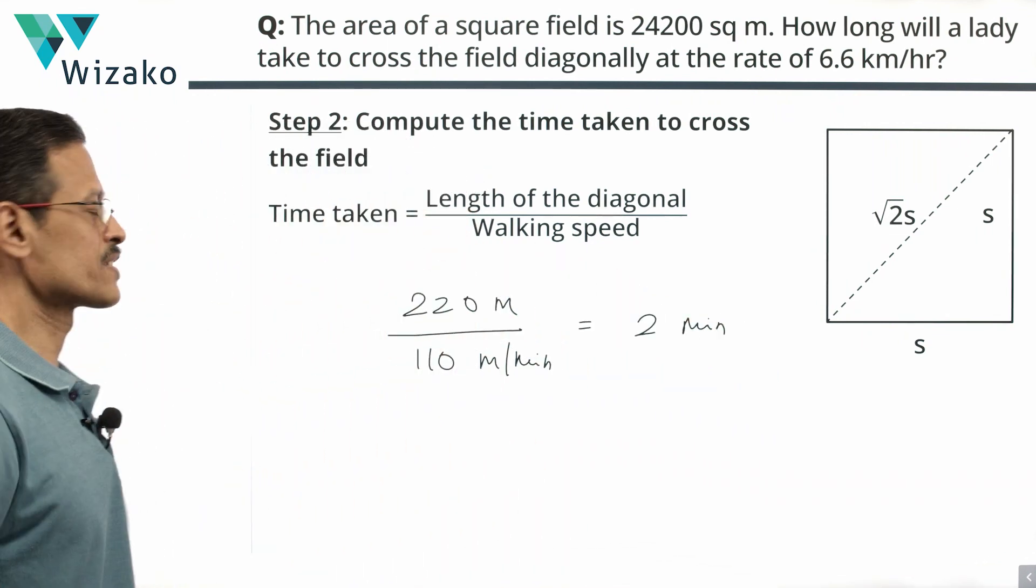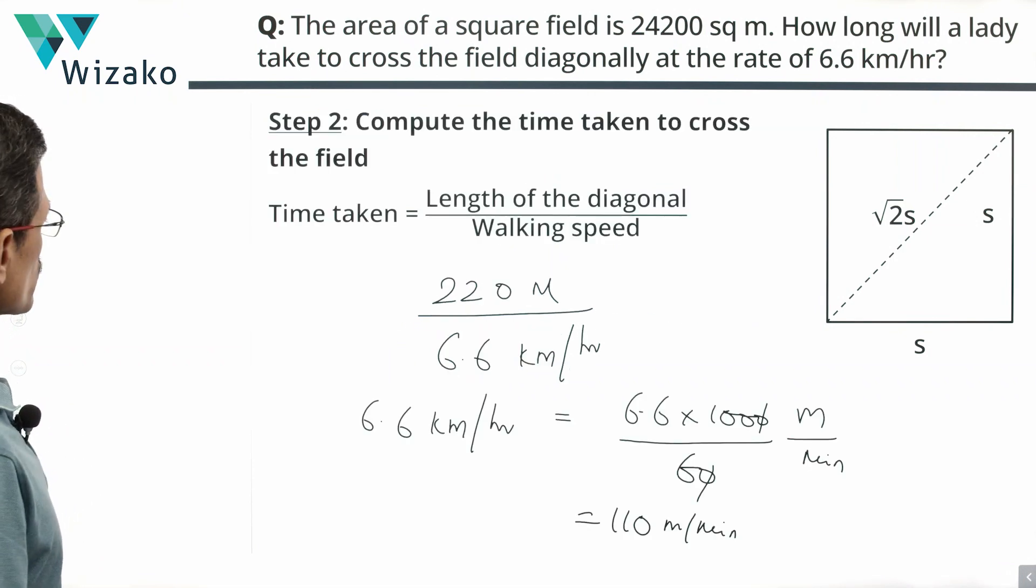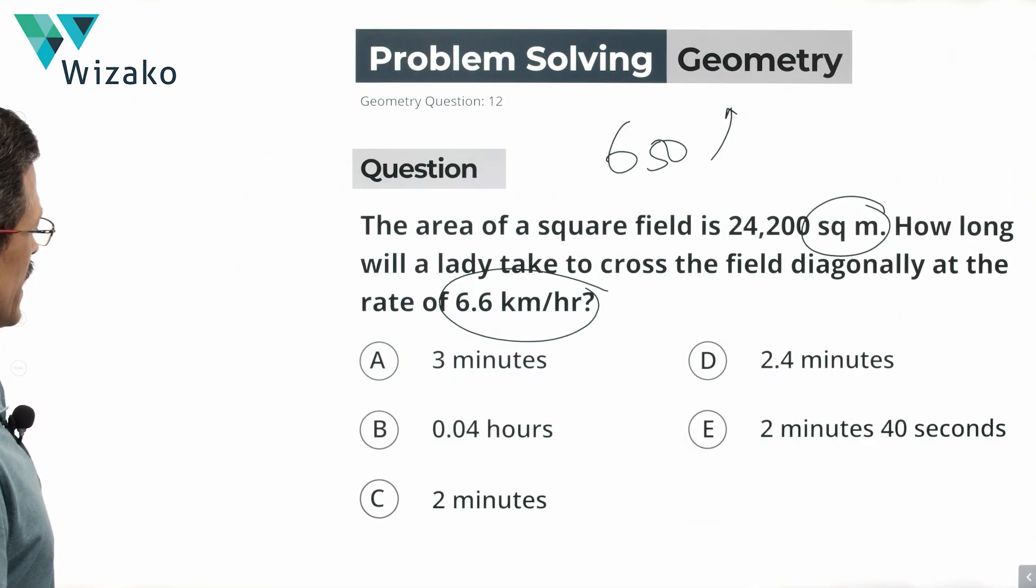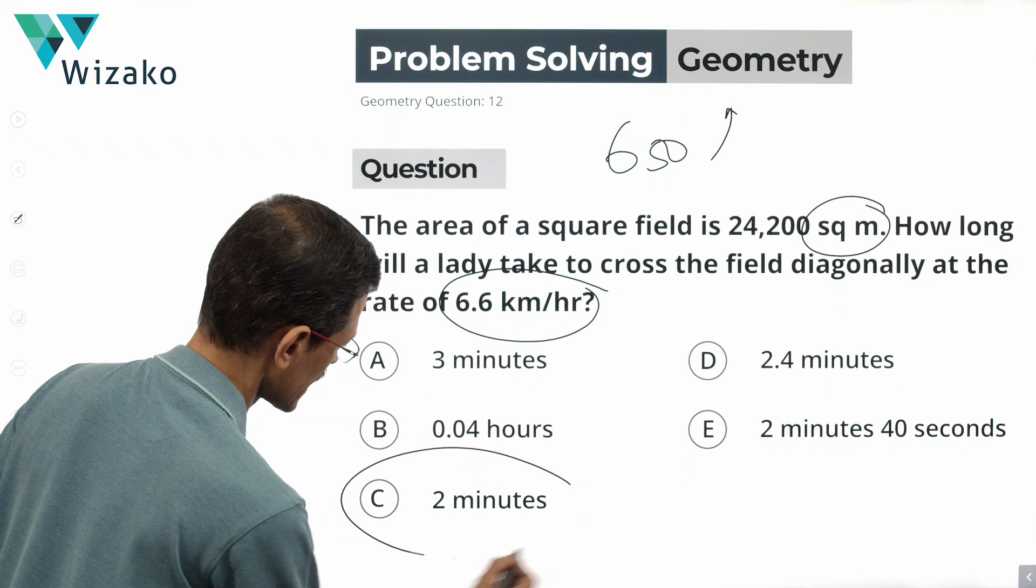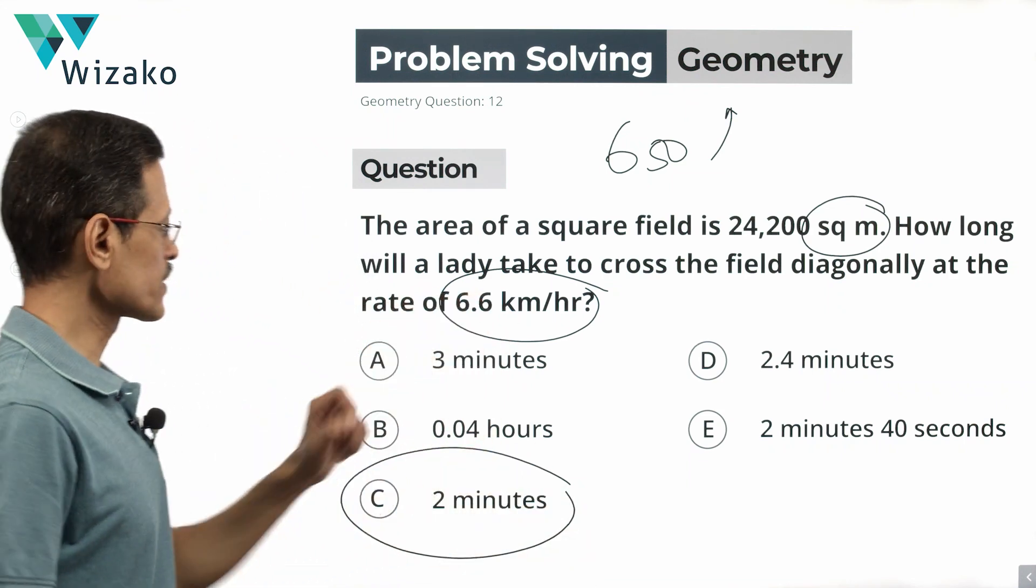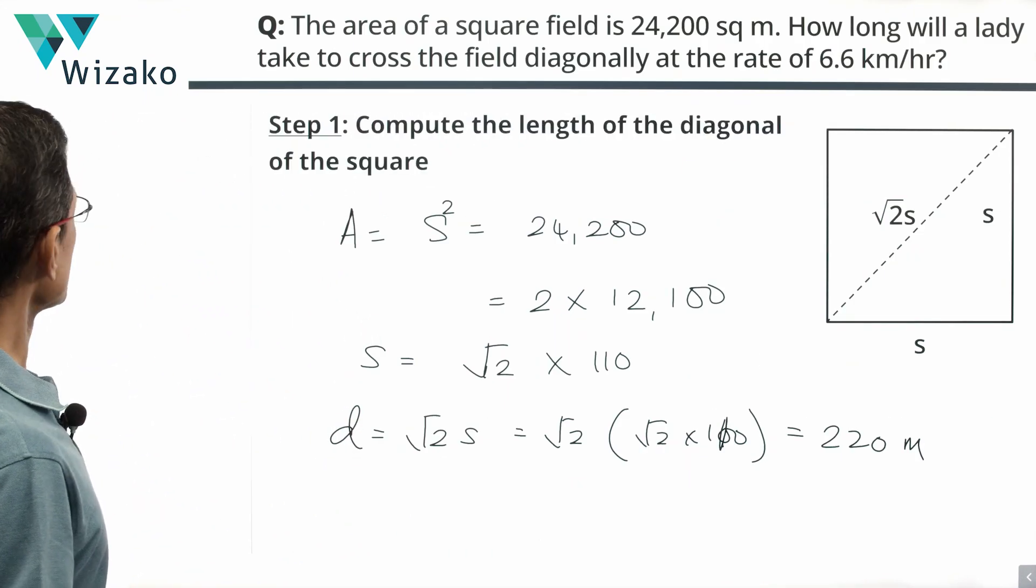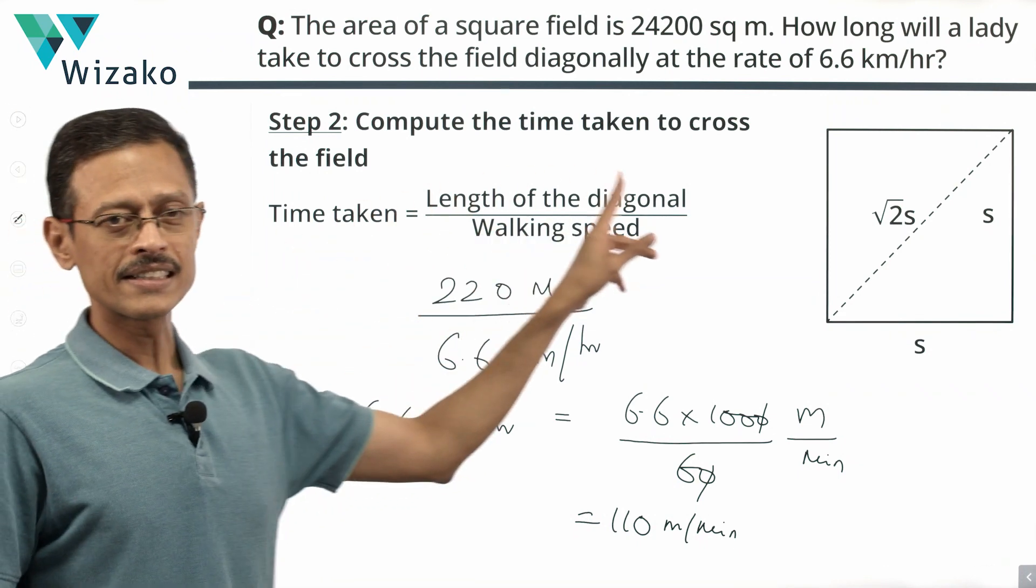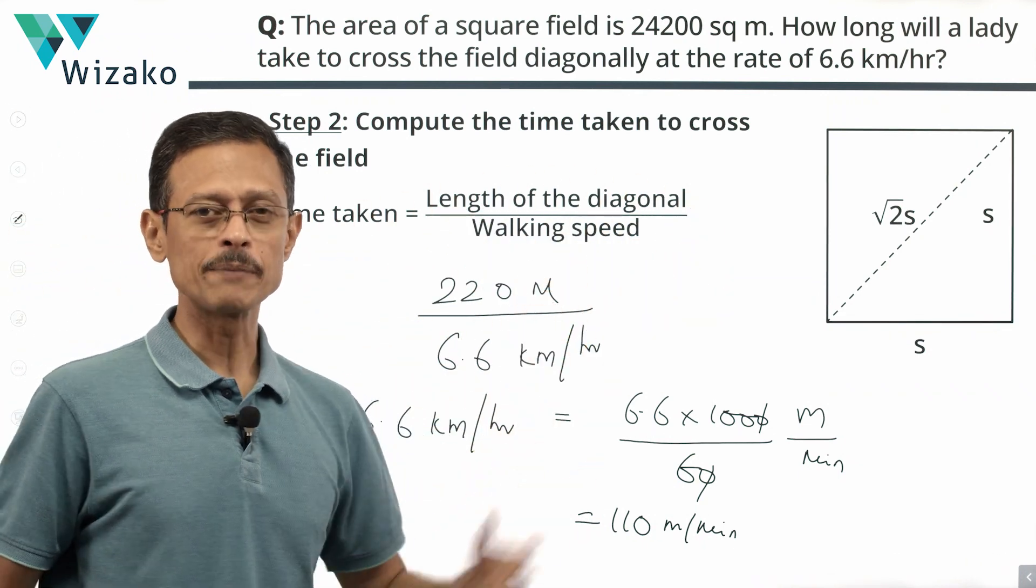I think I really saw an answer option with 2 minutes in it. We'll just go and check it out. Here is the answer option that we have. 2 minutes. Choice C is the correct answer to this question. Go back to the slide where we did the conversions of units.